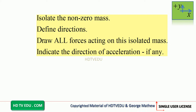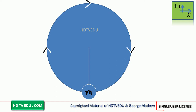Isolate the non-zero mass. Whenever we see any non-zero mass, isolate that non-zero mass, define the directions, draw all forces acting on this isolated mass, and indicate the direction of acceleration if any. We define positive x to the right, positive y is vertically up. Here is our mass m, at the bottom of the circle, with a radius of r.